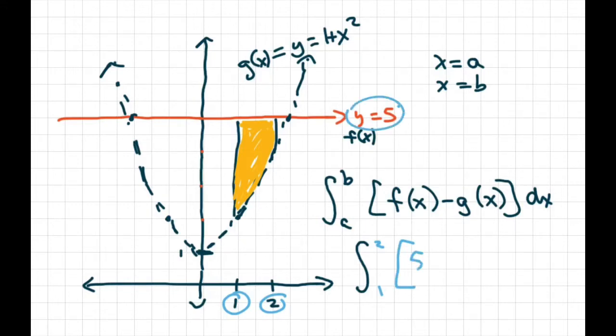Minus our bottom curve, and our bottom curve is going to be 1 plus x squared dx.